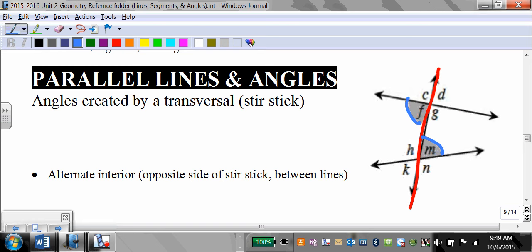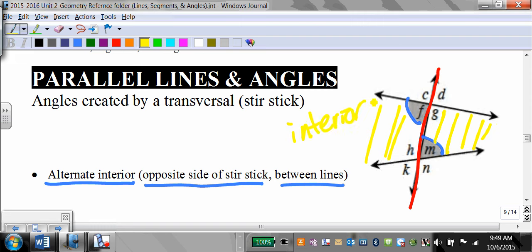These are called alternate interior angles. Opposite side of the stir stick, but between the lines. What's between the lines is called interior.